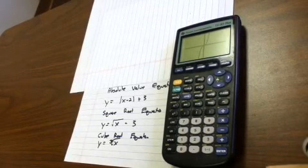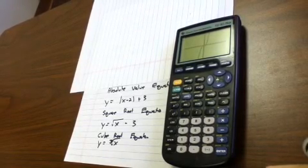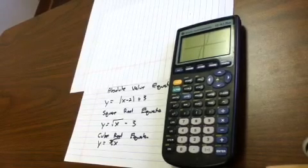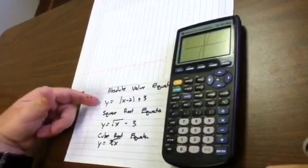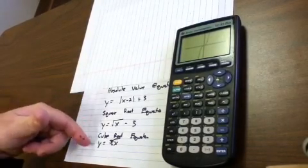This tutorial is part two of determining domains and ranges of equations using the graphical calculator. I have three new equations that I'm going to be working with: one's the absolute value, one's the square root, and one's the cube root.